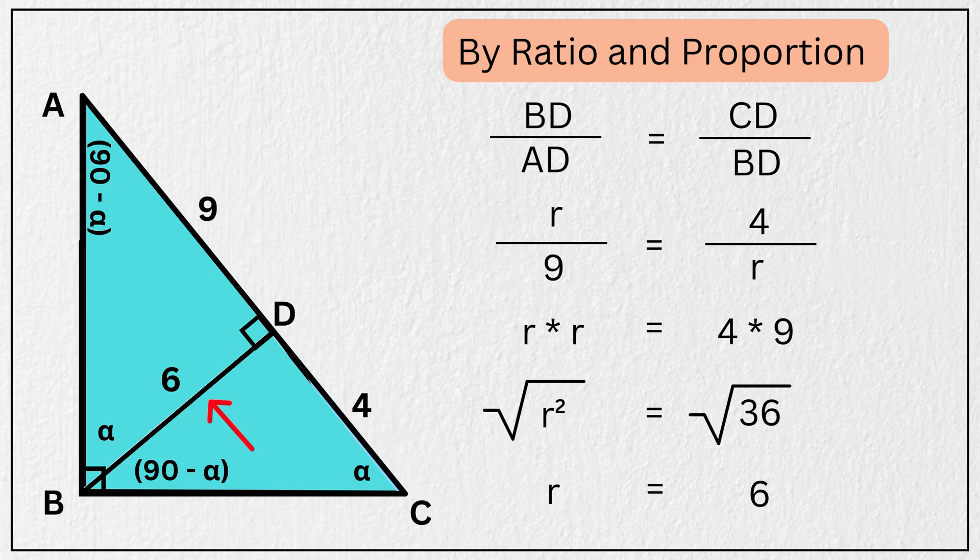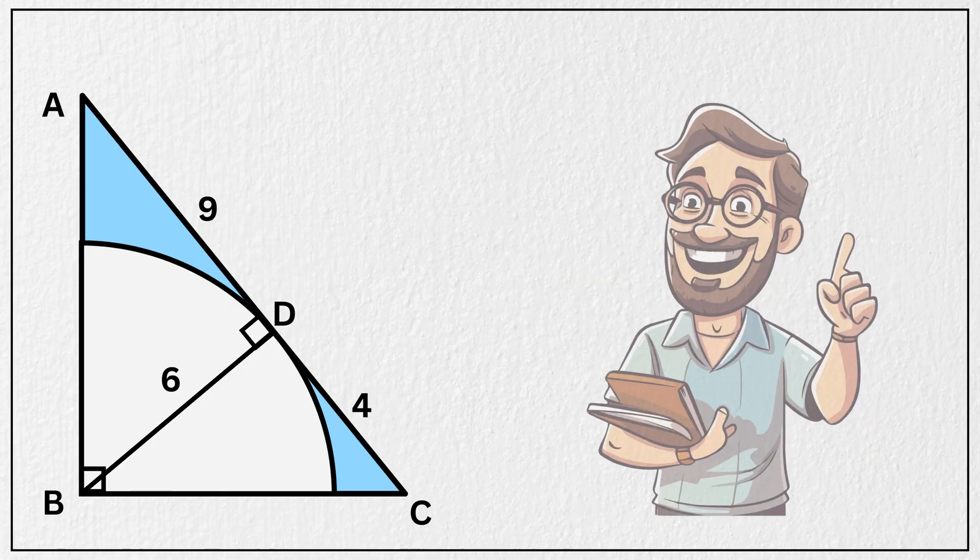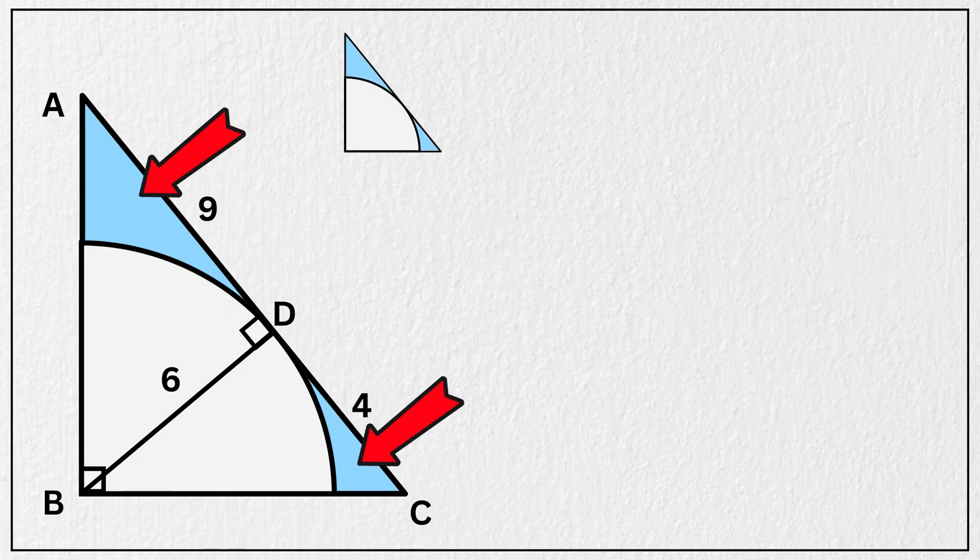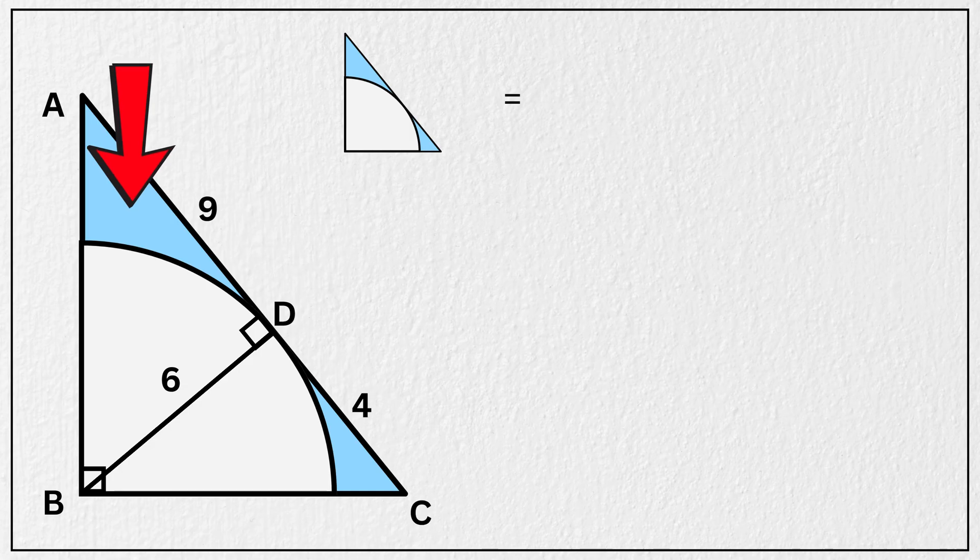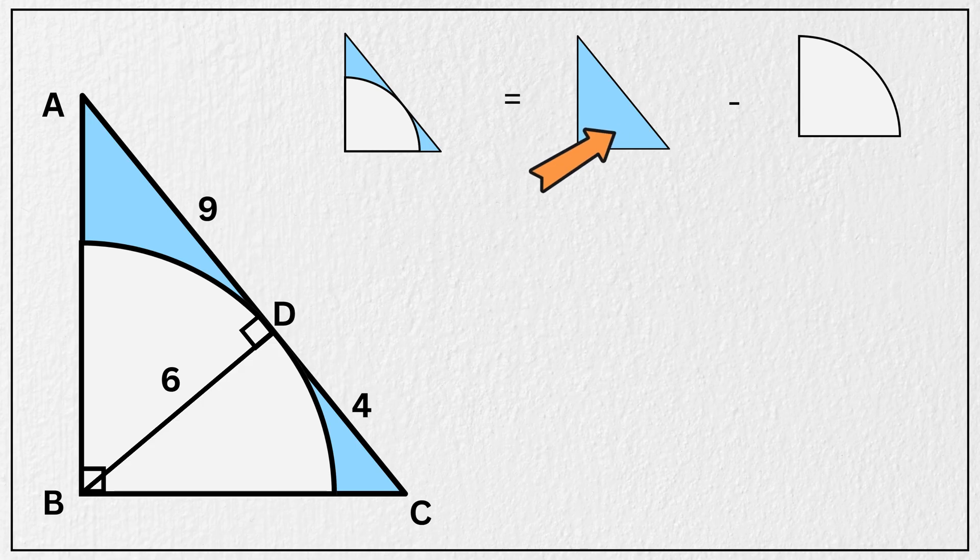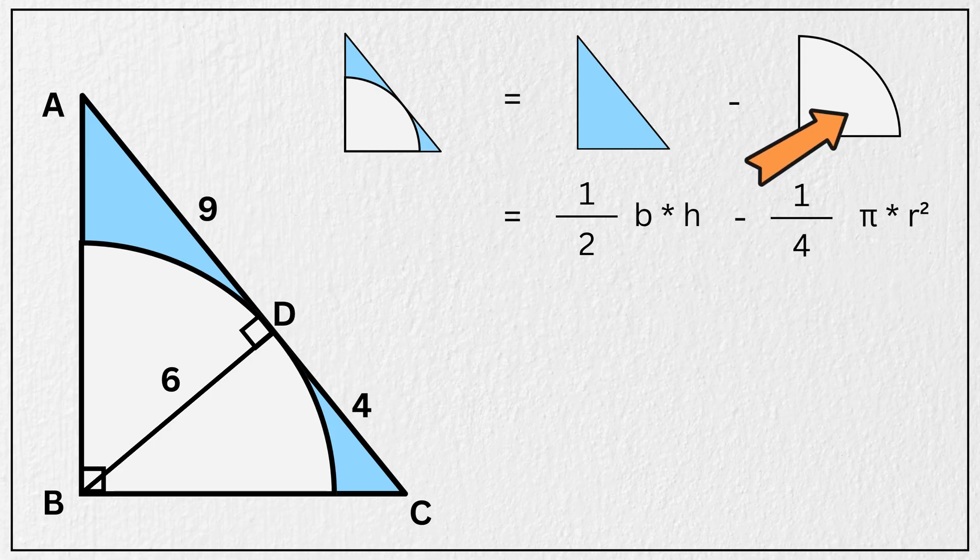So this length here is 6 units. Now looking at the diagram, we can say that the area of this blue shaded region is simply the area of this right-angled triangle minus the area of this quarter circle. And we know that the area of a triangle is calculated using the formula 1 half times base multiplied by height, and the area of a quarter circle is calculated using the formula 1 fourth times pi times radius squared.